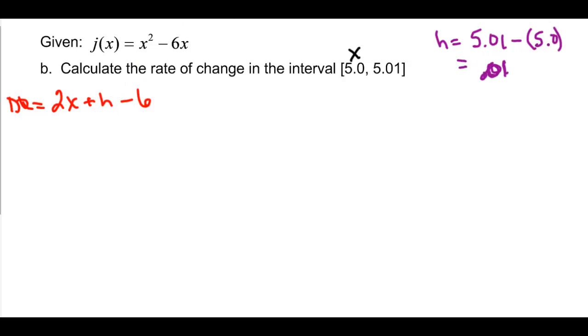So plugging and chugging, we have 2 times our x, which is 5, and then we have plus our h, which is 0.01, and then minus our 6. 10 plus 0.01 minus 6 is going to give us 4.01.